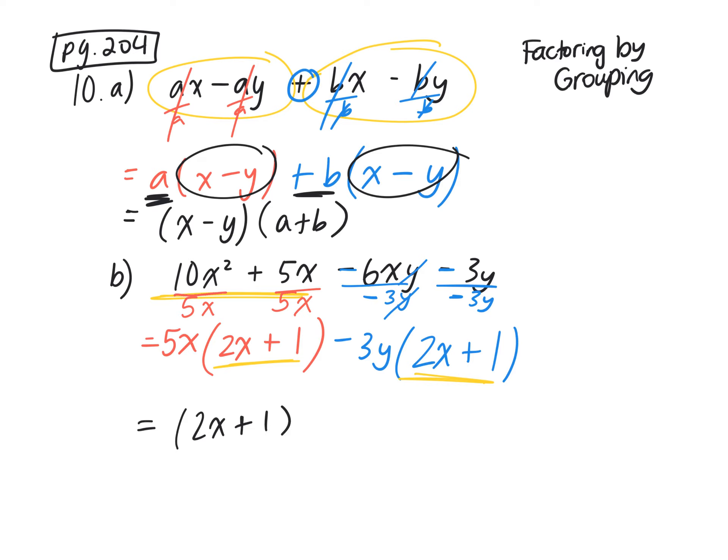So what's the final answer fully factored? Two X plus one times five X minus three Y. It doesn't matter if you write it the other way around, either method is correct.